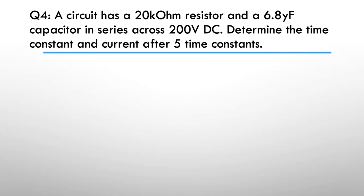Question four: a circuit has a 20k ohm resistor and a 6.8 microfarad capacitor in series across 200 volts DC. Determine the time constant and the current after five time constants.